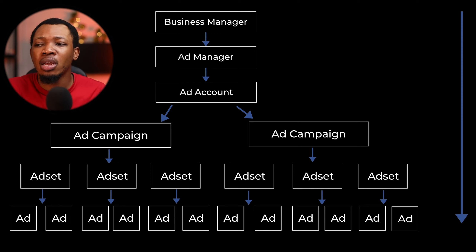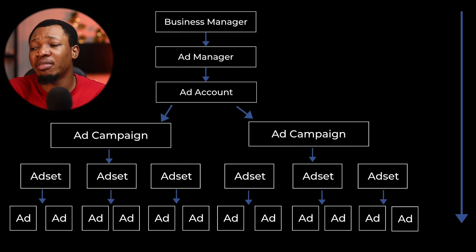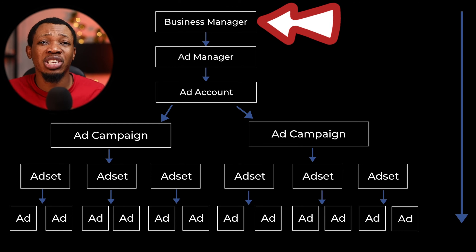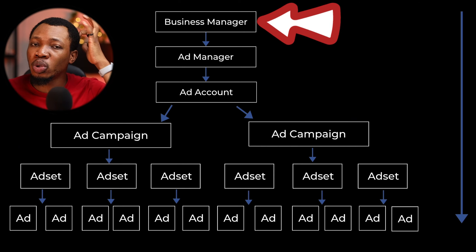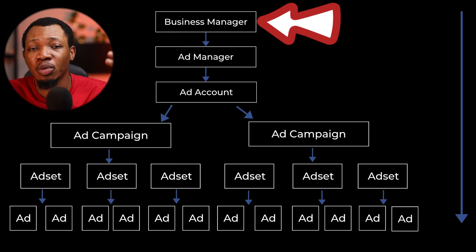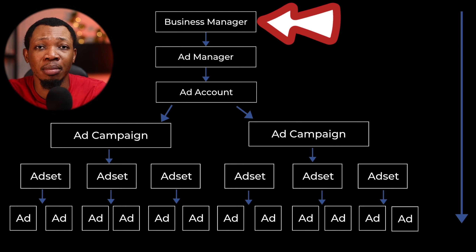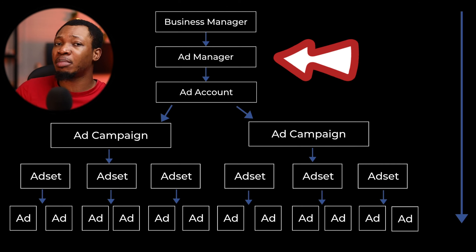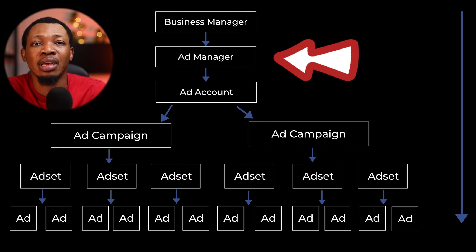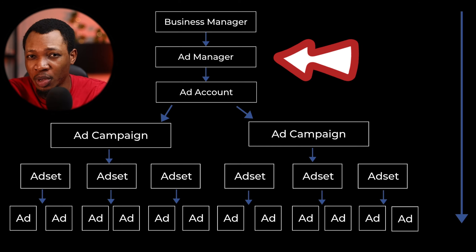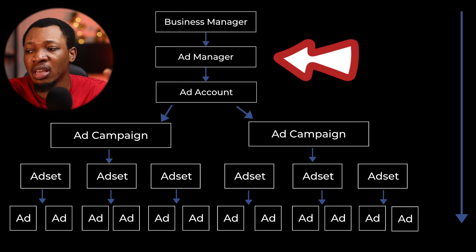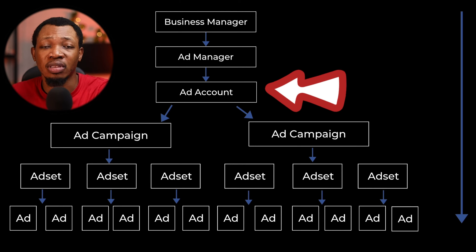Now this is the hierarchy of Facebook ads, and it's very important to understand it because it gives you knowledge on how your Facebook ad is going to be fully set up. At the top we have the Business Manager, where you manage everything surrounding your Facebook business — the Meta Business Suite — which oversees the overall scope. Below that we have the Ad Manager, which is specifically for your ads, managing everything from billing to payments to your tracking pixel.